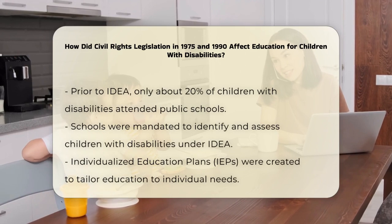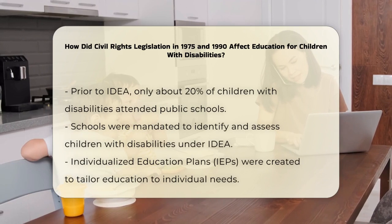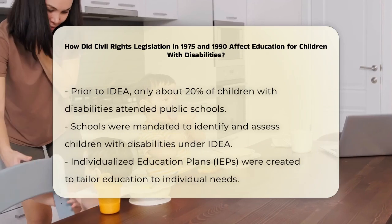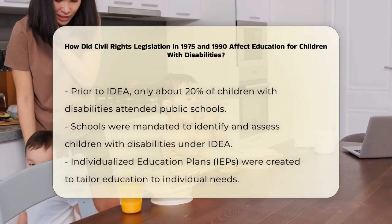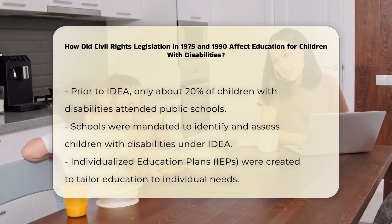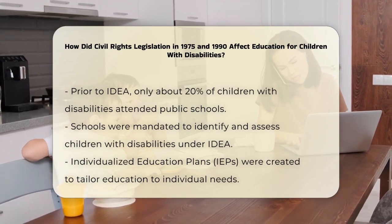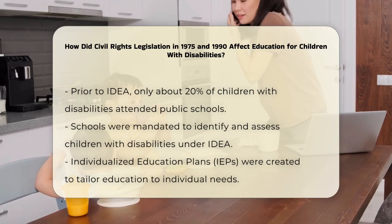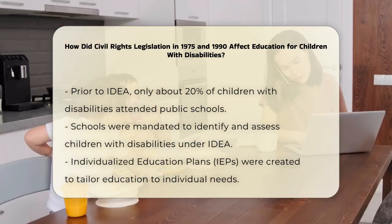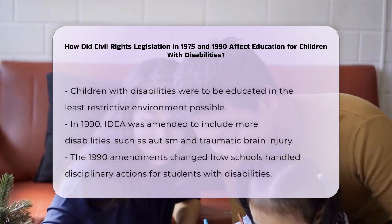Before this, many children with disabilities were either institutionalized or received no education at all. Only about 20% of children with disabilities attended public schools, and even then, they often didn't get the support they needed. The EAHCA mandated that schools identify and assess children with disabilities and provide them with special education services tailored to their individual needs, including Individualized Education Plans, or IEPs. The law also required that these children be educated in the least restrictive environment possible, meaning they should be in classrooms with their non-disabled peers as much as possible.